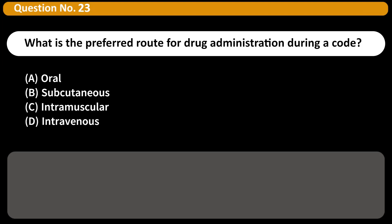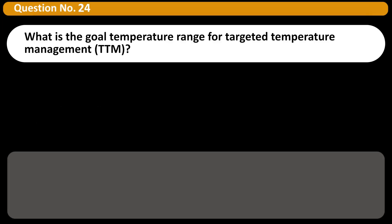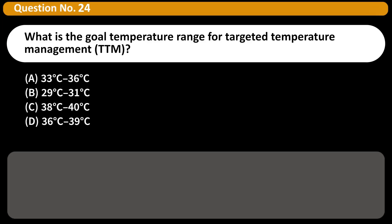What is the preferred route for drug administration during a code? A. Oral. B. Subcutaneous. C. Intramuscular. D. Intravenous. Answer: D. IV route is preferred for rapid drug delivery during cardiac arrest. IO route is an alternative if IV access is delayed.